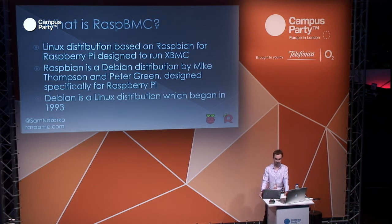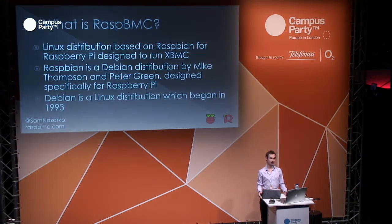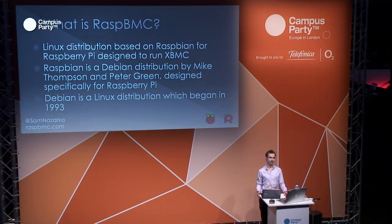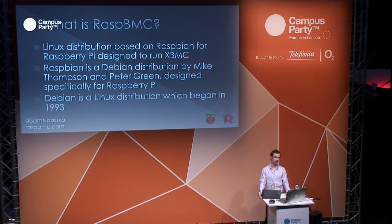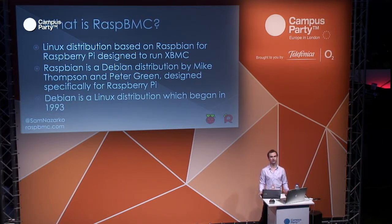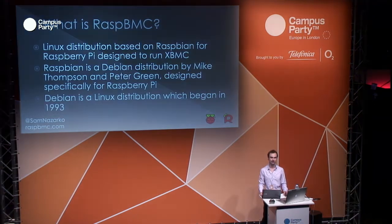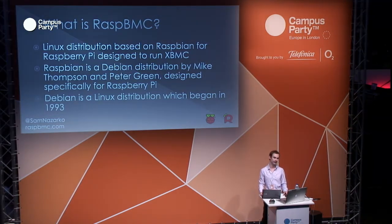XBMC, which Raspbmc runs, is a free and open source media center. Its origin started on the original Xbox. Now it runs on pretty much everything, from Android to iOS to Windows. It's highly forked — the Boxy Box is based off of it, Plex is based off of it. But some of its origins caused design challenges later on, when moving it to new hardware.